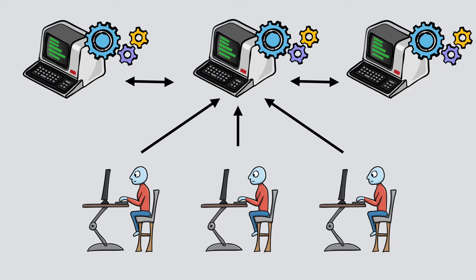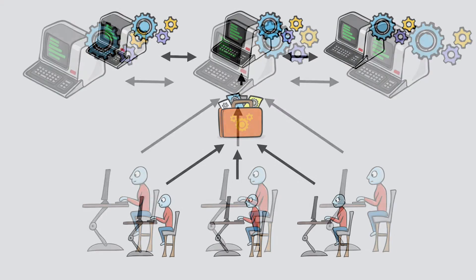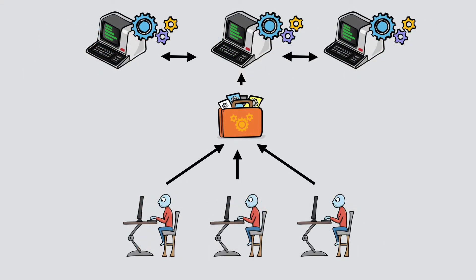Bazel also allows us to perform remote caching. When we declare a build, we have inputs and outputs. We can configure a server to store the outputs of builds. This means if nothing has changed from a build target, Bazel can be configured to use that output. This can drastically increase the speeds of your builds.